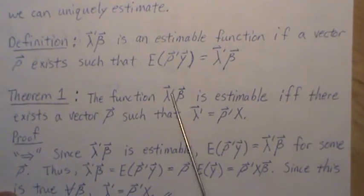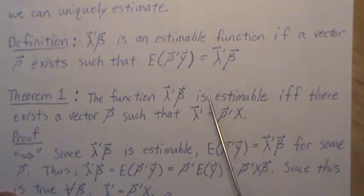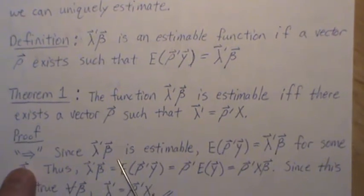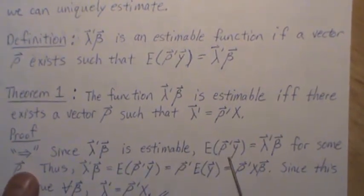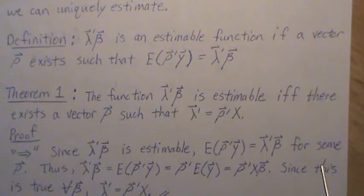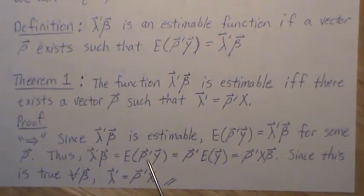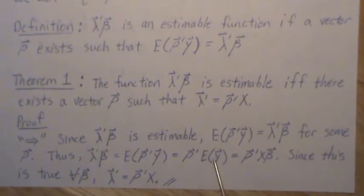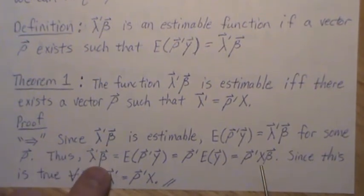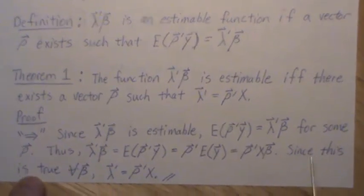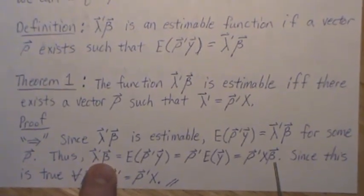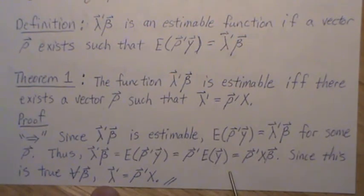Since it's an if-and-only-if, we prove both directions. First, assume lambda beta is estimable — that means an unbiased estimate of a linear combination of the y's exists for some rho. Thus lambda beta equals this expectation, and since the expected value of y is x beta, we have this. But since this is true for all beta, we know that lambda transpose equals rho transpose x, and that's what we wanted to show.